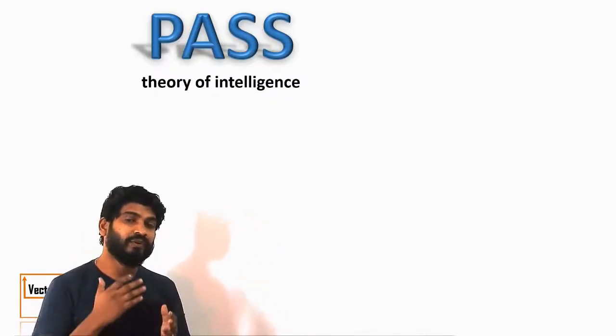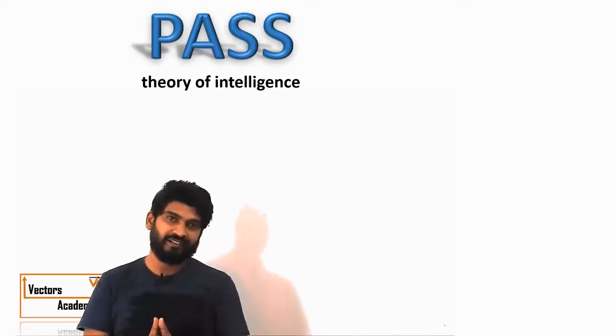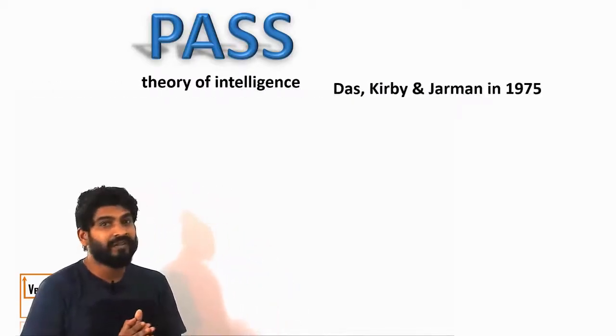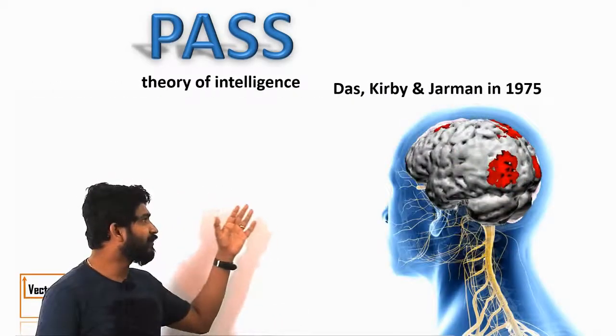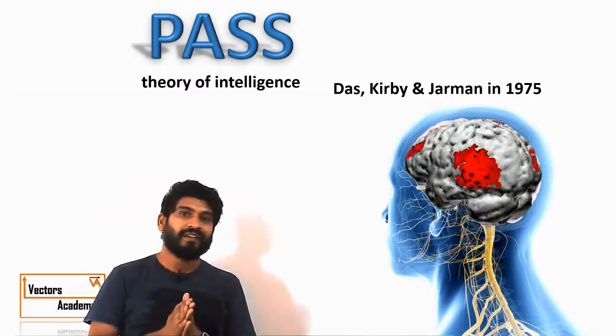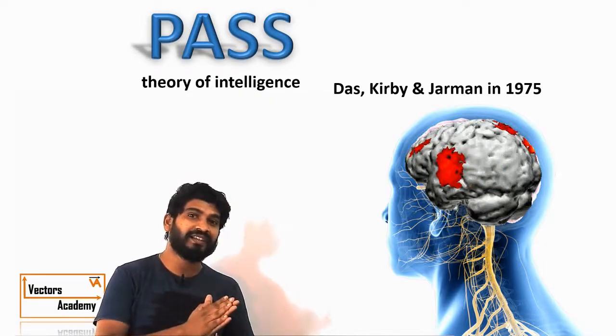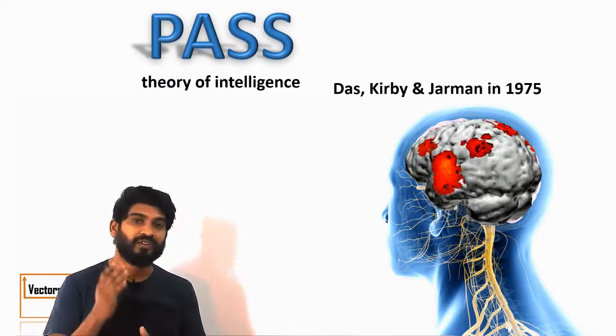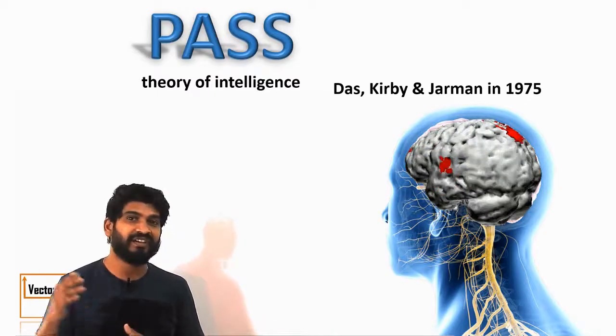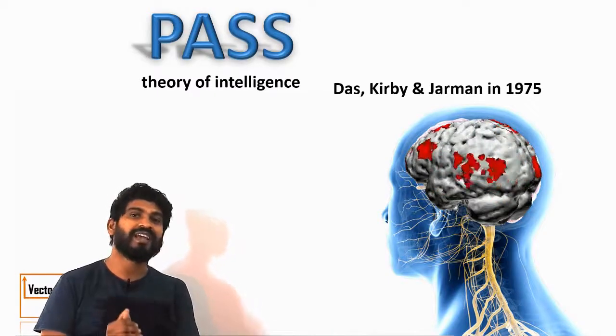Prior to this theory, there was G factor theory, which was basically used for different psychological researches. But in 1975, the initial work of Das, Kibbe and German decided to bring up this theory based on their neuropsychological research conducted on humans.